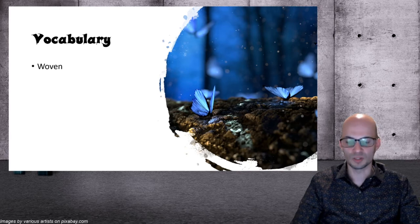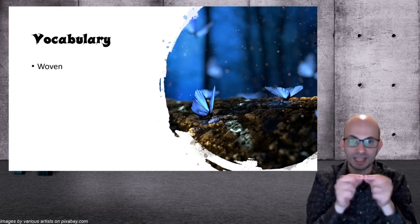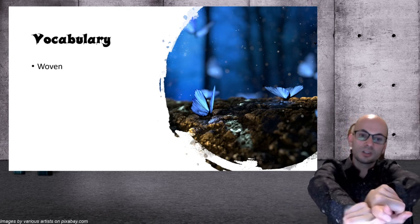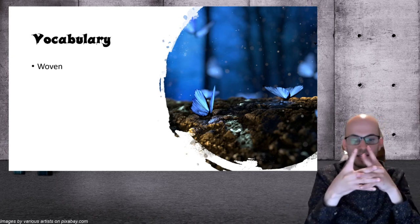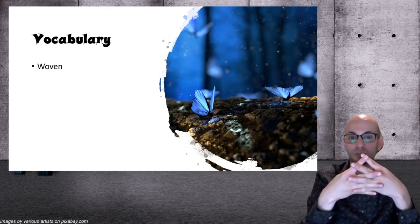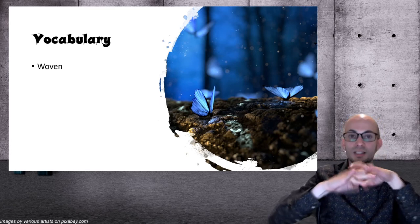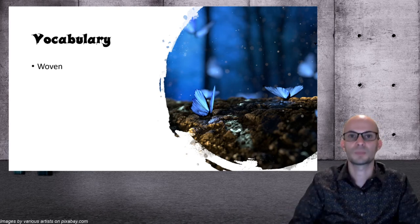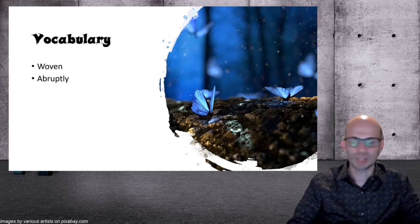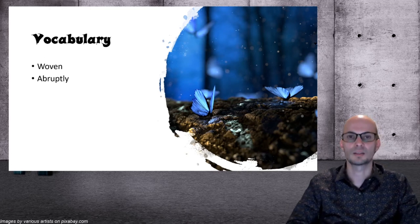The first word is woven. Woven is like knit. Strings go across each other and become some kind of bag or shape or shirt. They're woven together so they don't break and they hold. That's the net that they're in. Abruptly means suddenly.